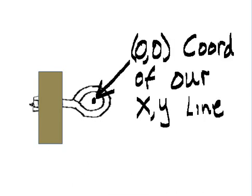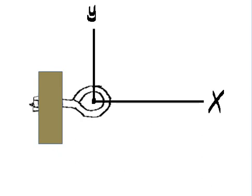The zero, zero coordinate of our x, y line is right there. And now there's our x and y line.